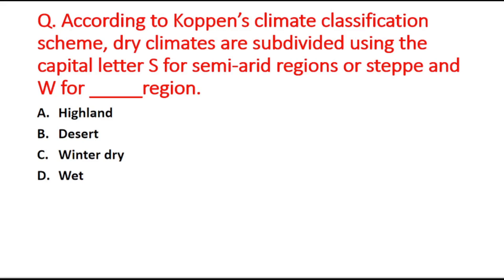Next question: According to the Köppen climate classification scheme, dry climates are subdivided using the capital letter S for semi-arid reason and W for blank reason. Option A is highland, B is desert, C is winter dry, and D is wet reason. The capital letter W denotes the desert region according to the Köppen climate classification scheme.